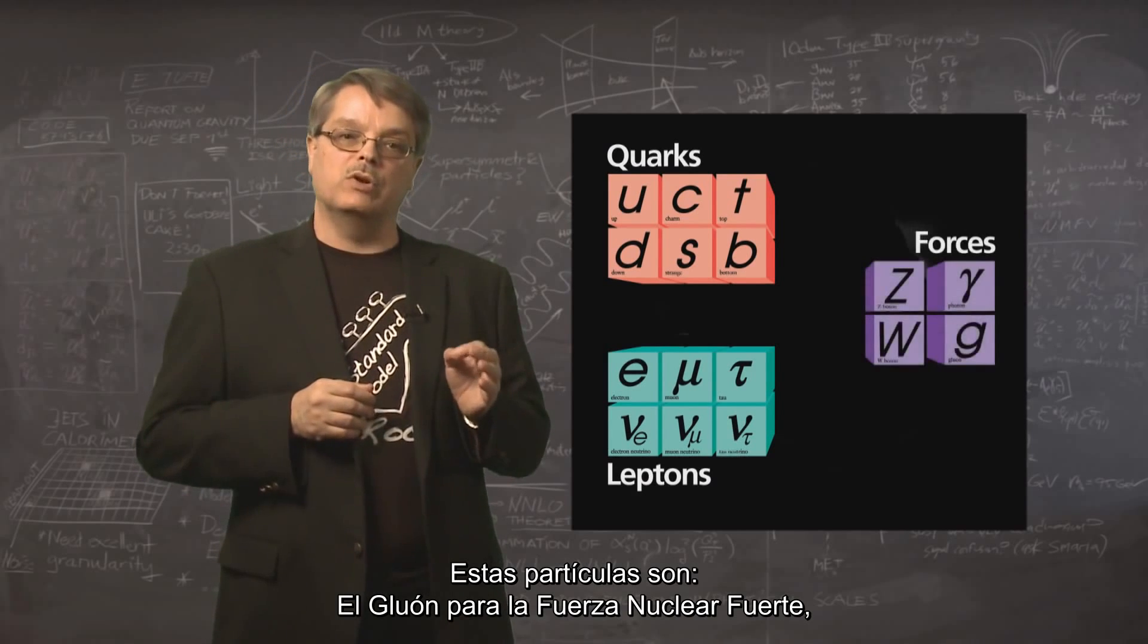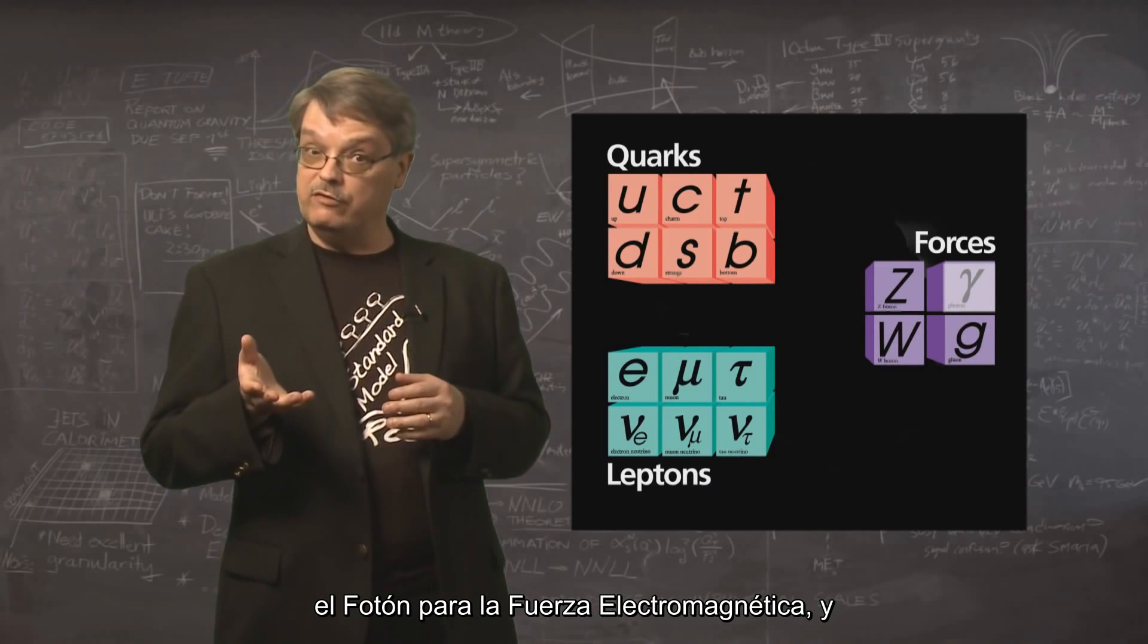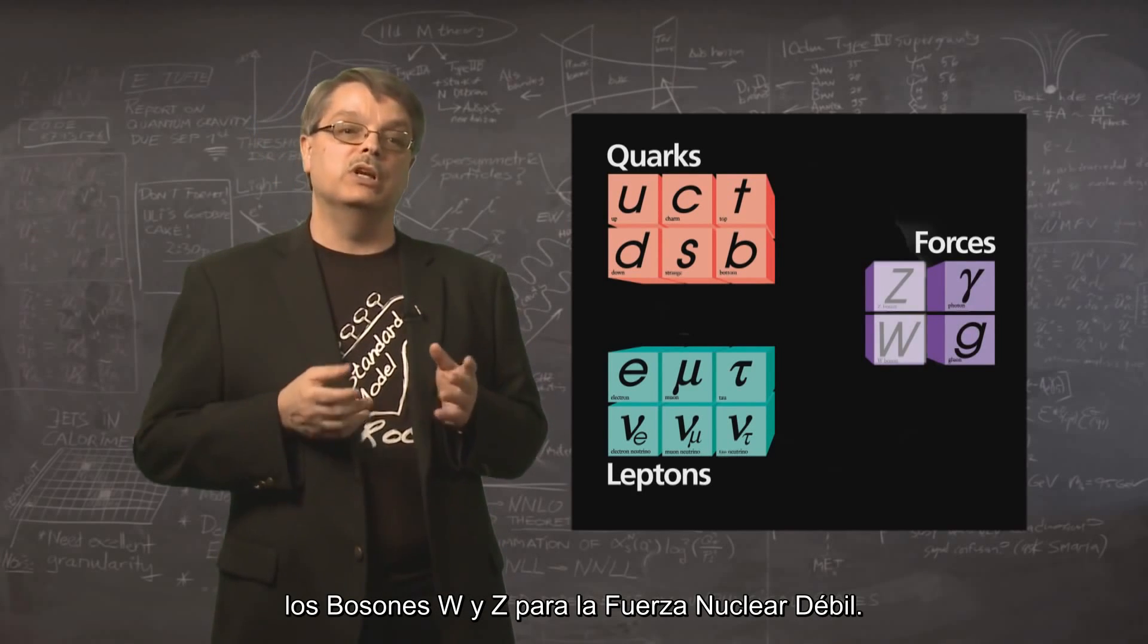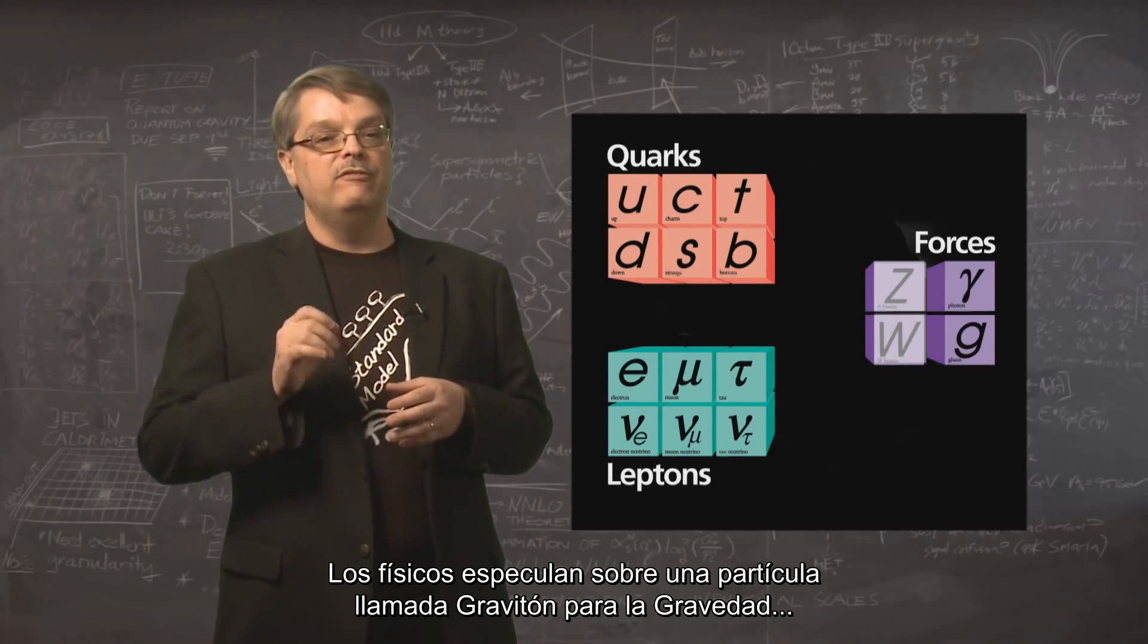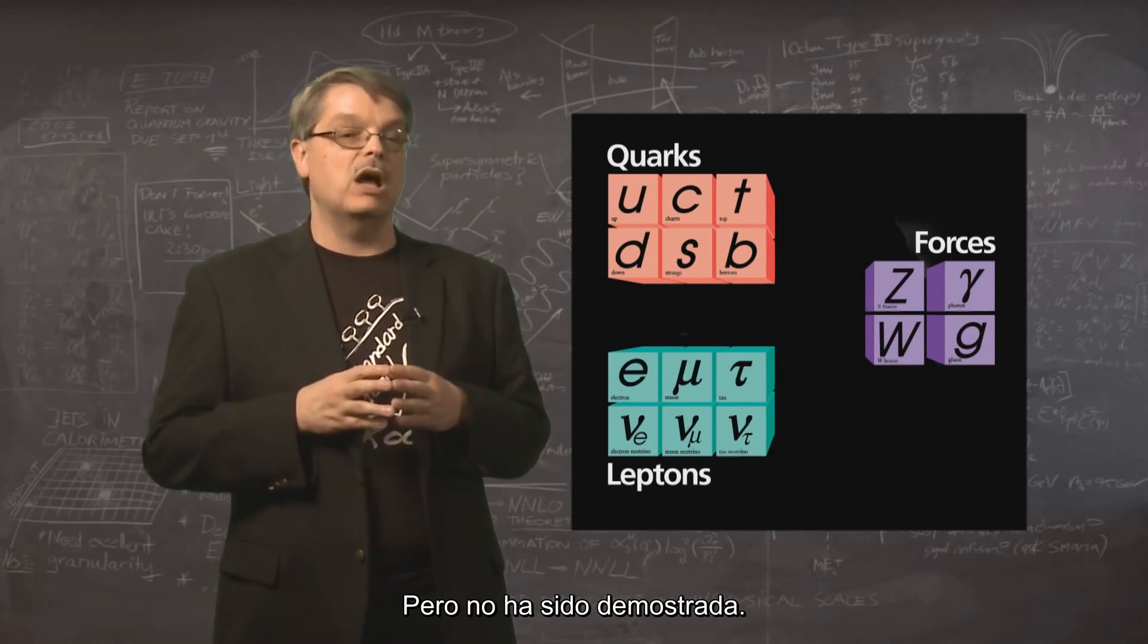All the subatomic forces work by exchanging a different kind of particle. The particles are the gluon for the strong nuclear force, the photon for the electromagnetic force, and the W and Z bosons for the weak nuclear force. Physicists speculate about a particle called the graviton for gravity, but this has not been demonstrated.